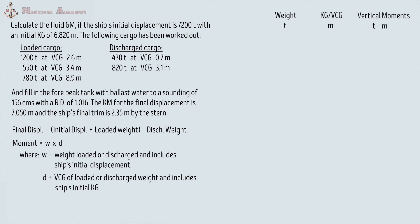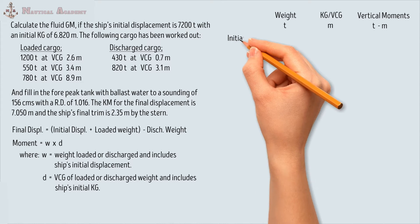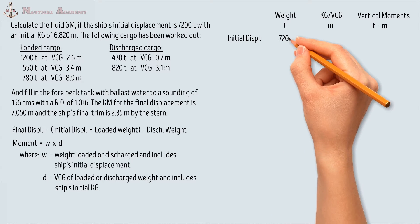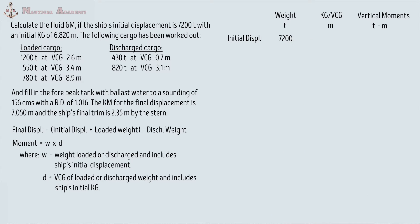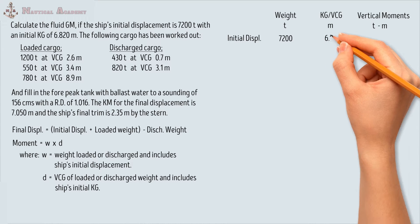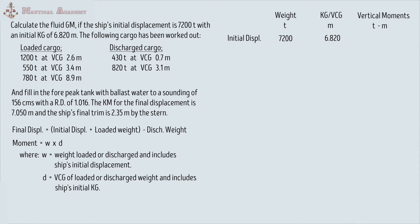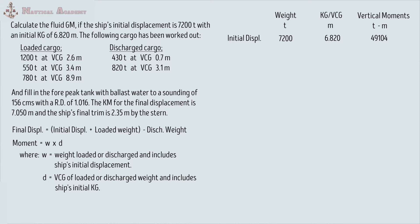First, we will find the vertical moment of the ship during its initial condition. The ship's initial displacement is 7,200 tons, multiplied by the initial KG which is 6.820 meters. The vertical moment is 49,104 ton-meter.